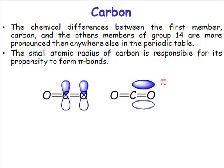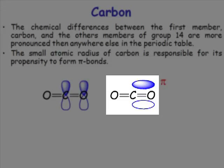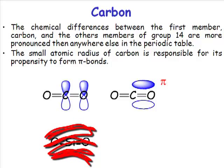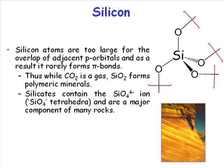The earlier elements in a group are much more likely to form multiple bonds than the later elements. So the structure of carbon dioxide is a multiply bonded structure, where the structure of silicon dioxide is not a multiply bonded structure. Silicon atoms are too large for the overlap of p orbitals.